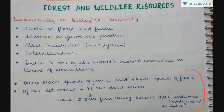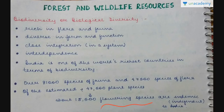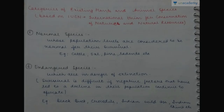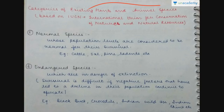India is one of the world's richest countries in terms of biodiversity — we have different varieties of flora and fauna present in our nation. Over 81,000 species of fauna and 47,000 species of flora are found in India. Of the estimated 47,000 plant species, roughly about 15,000 flowering species are endemic to India — endemic meaning indigenous, present in India specifically.